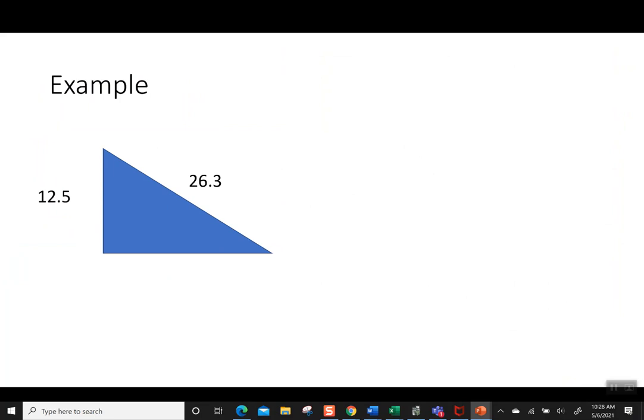Okay, one more. I have 12.5 as a height, 26.3 as a hypotenuse, and I'm missing this bottom, which I would call the base of x. Setup should be 12.5 squared plus x squared is 26.3 squared. And it doesn't matter if I put the 12.5 or the x first. I just need to square both of them. So x needs to be by itself. So I'm going to move this 12.5 squared to the other side. I have x squared is 26.3 squared minus 12.5 squared.